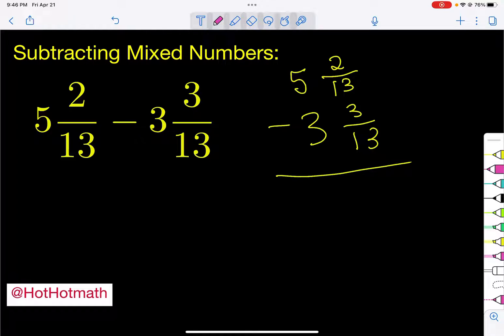So we're going to take one whole off of the 5. And so if we take one off of there, it's going to become a 4. Now what do we do next?